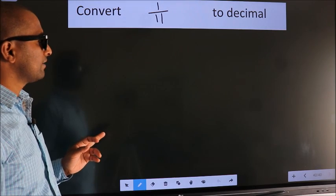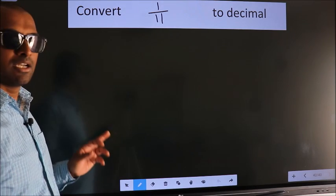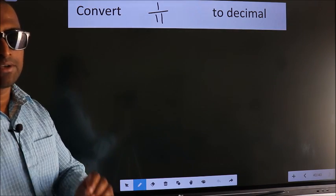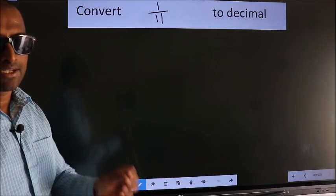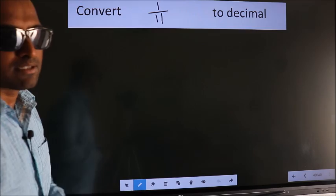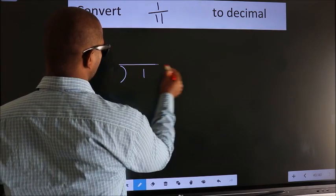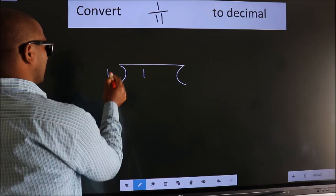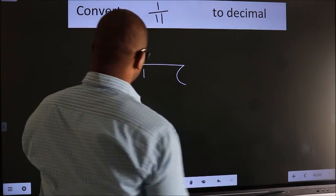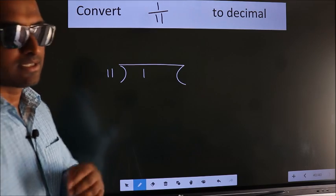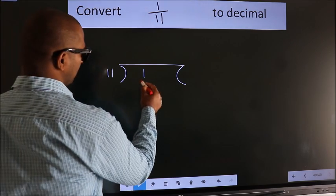Convert 1 by 11 to decimal. To convert this fraction to decimal, we have to divide. To divide, we should frame it in this way: 1 here, 11 here. This is your step 1.